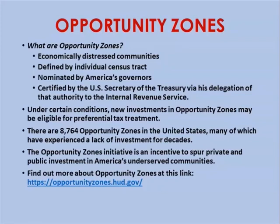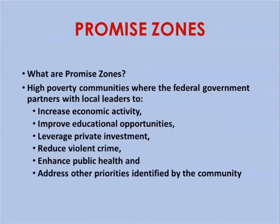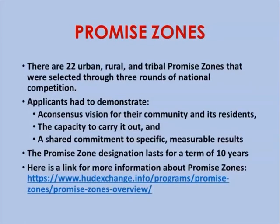You can find out more at opportunityzones.hud.gov. Promise zones are high-poverty communities where the federal government partners with local leaders to increase economic activity, improve educational opportunities, leverage private investment, reduce violent crime, enhance public health, and address other priorities identified by the community. There are 22 urban, rural, and tribal promise zones selected through three rounds of national competition. Applicants had to demonstrate a consensus vision, the capacity to carry it out, and a shared commitment to specific measurable results. The promise zone designation lasts for a term of 10 years.